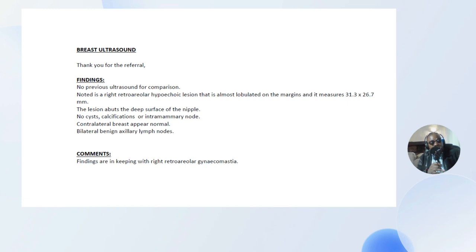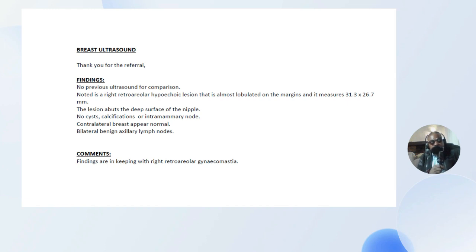No previous ultrasound was available for comparison. When doing most examinations it's critical to track history — check when the mass was noted, its dimensions, whether it's growing, and any architectural deformations. In this case there was no prior history to relate to. Noted is a right retroareolar hypoechoic lesion, almost lobulated on the margins, measuring 13 by 26.7 millimeters. I should note I was lazy and only took two measurements — a mass should be captured in three dimensions. Don't be lazy; capture all relevant information.